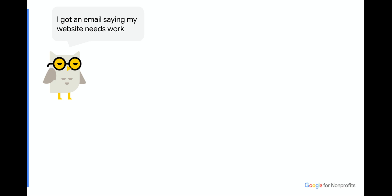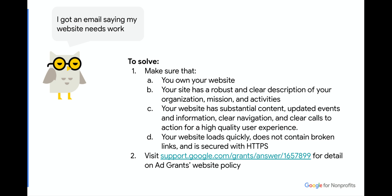You may also get an email saying your website needs some work. To solve this, you'll need to do some work on your nonprofit's website. Make sure that you own the website you're planning to use for Ad Grants, that it has a robust and clear description of your organization's mission and activities, substantial content, updated events and information, and clear navigation. You'll also want to make sure your website loads quickly, doesn't contain broken links, and is secured with HTTPS. For more detail on the Ad Grants website policy, navigate to the URL listed or visit support.google.com/grants and search for website policy.